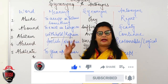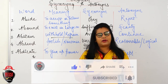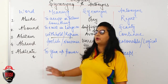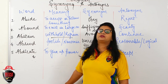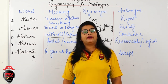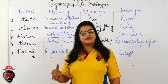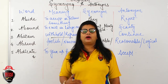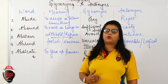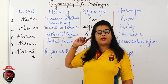These are the five words we have learnt today for synonyms and antonyms: Abide, Abound, Abstain, Absurd, Abdicate. Daily we will be learning five to six words and you have to memorize them. As homework, study more words with their synonyms and antonyms from your books or the internet. Thank you.